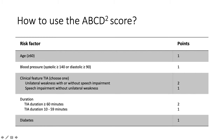So: age 60 and above, blood pressure high, clinical feature of TIA — if you had unilateral weakness you get two points, and if you don't have unilateral weakness but have speech impairment, you get one point. Duration of symptoms: if it's more than 60 minutes you get two points, and if it's 10 to 59 minutes you get one point. And lastly, diabetes — you get one point.